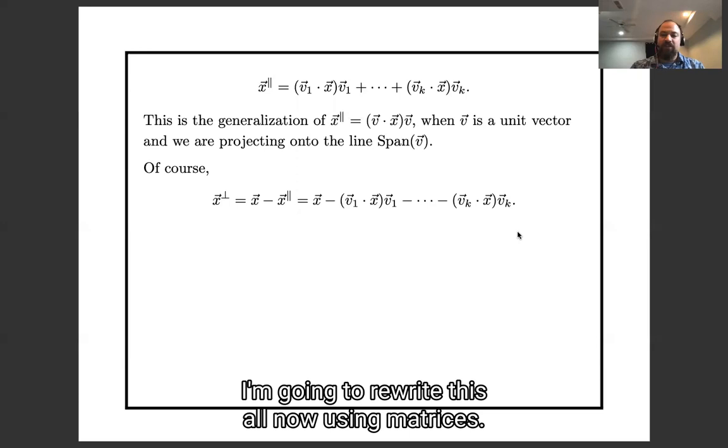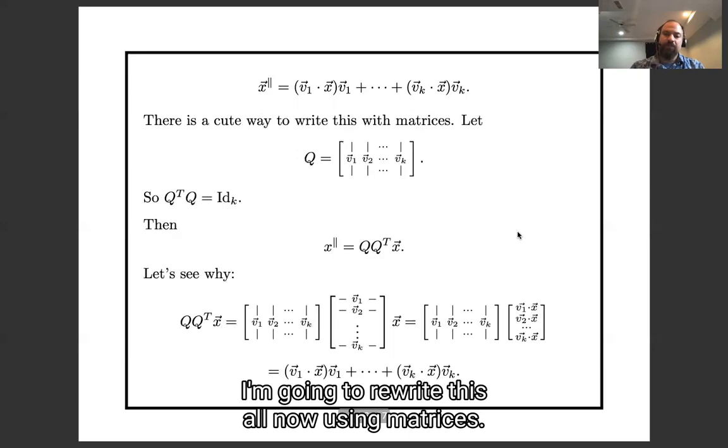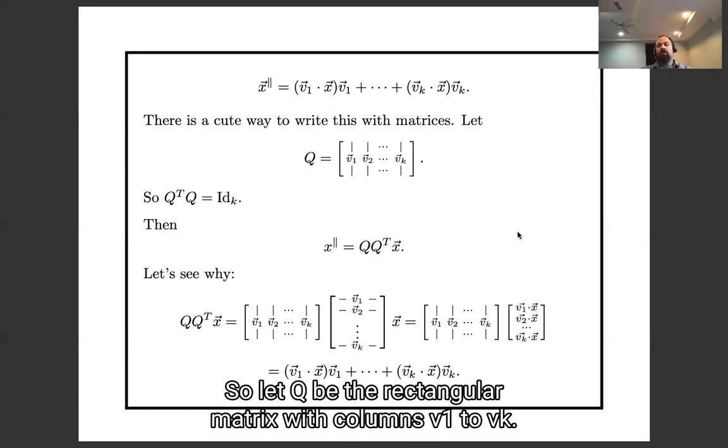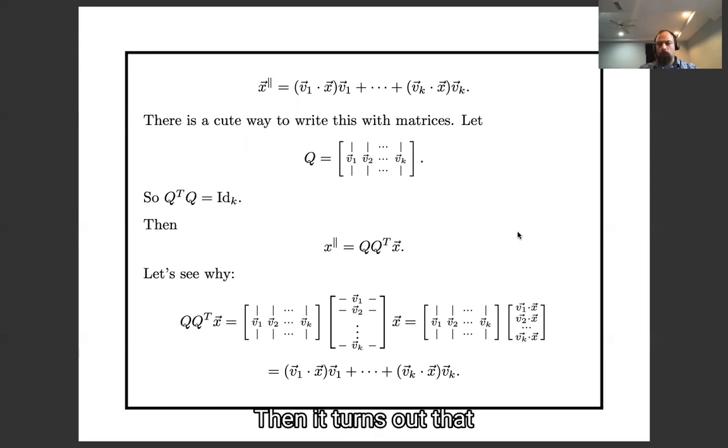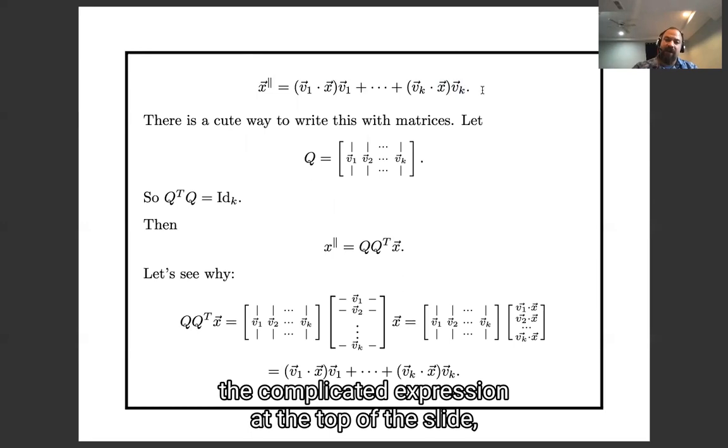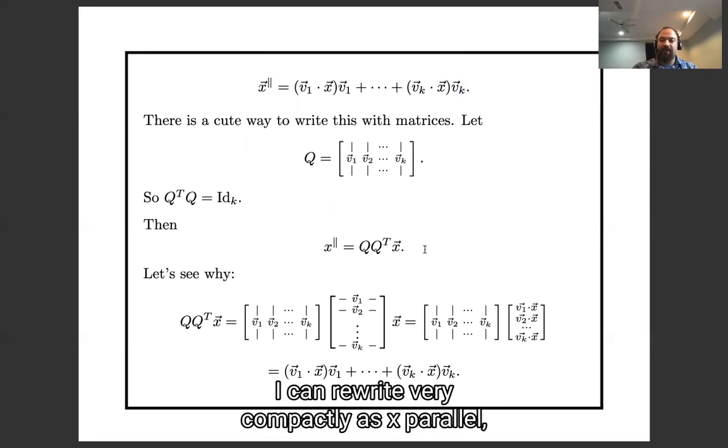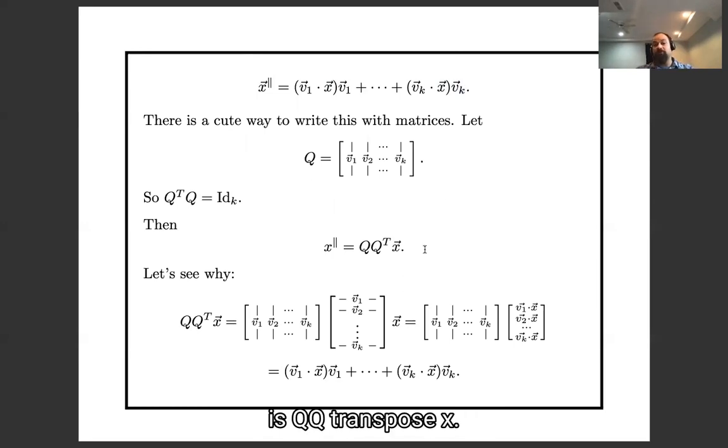Okay, I'm going to rewrite this all now using matrices. So let Q be the rectangular matrix with columns v1 through vk, so Q transpose dot Q is the identity matrix. Then it turns out that the complicated expression at the top of the slide I can rewrite very compactly as x-parallel is Q Q transpose x.